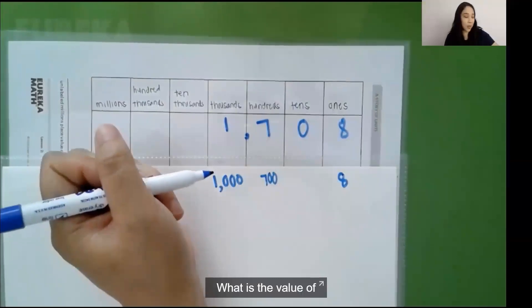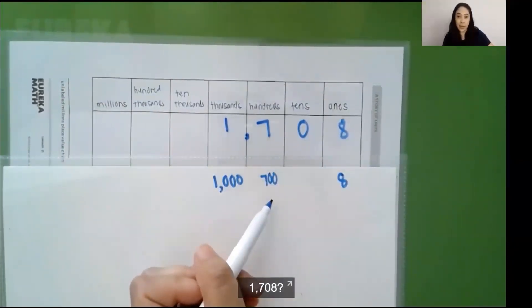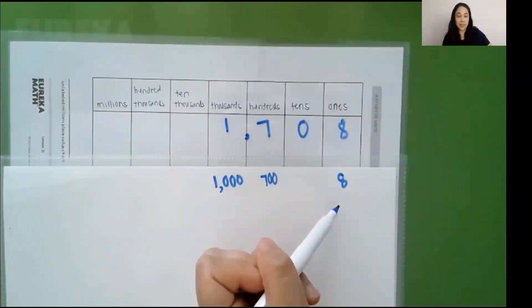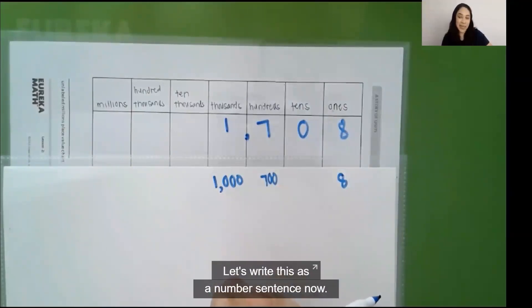What is the value of 1,708? The value is 1,708. So 1,708 is the same as 1,000 plus 700 plus 8. Let's write this as a number sentence now.